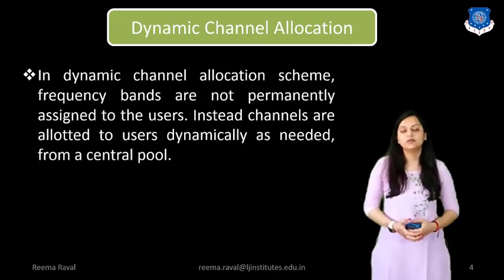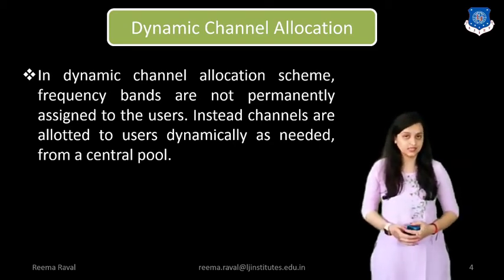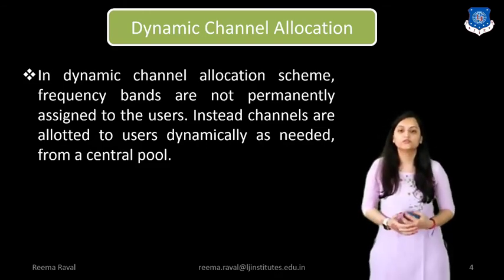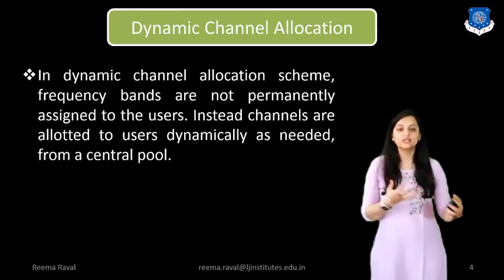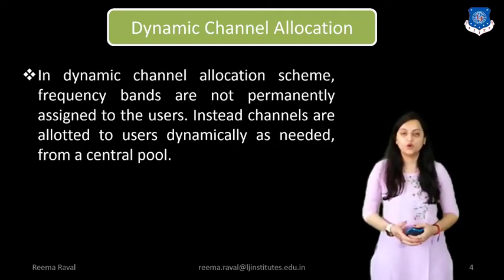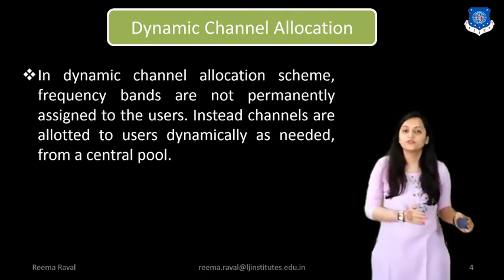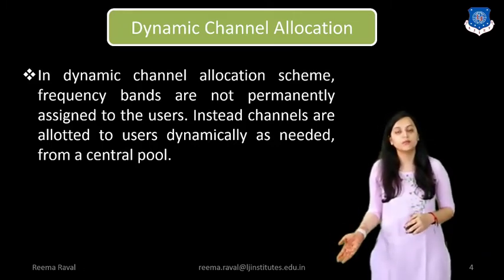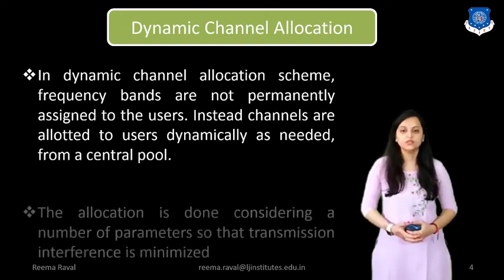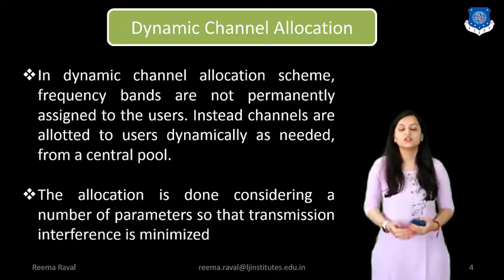In Dynamic Channel Allocation, frequency bands are not permanently assigned to users. Instead, channels are allotted to users dynamically as needed from a central pool. That means any user can use any available channel from the central pool. Unlike Static Channel Allocation, fixed channels are not used for fixed users — any channel can be used by any user when data has to be transmitted. The allocation is done considering a number of parameters so that transmission interference is minimized.